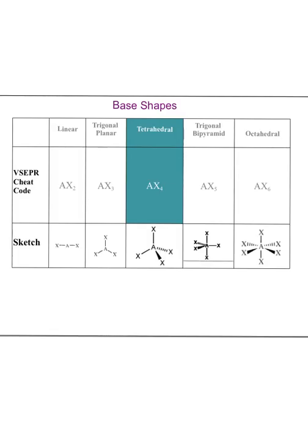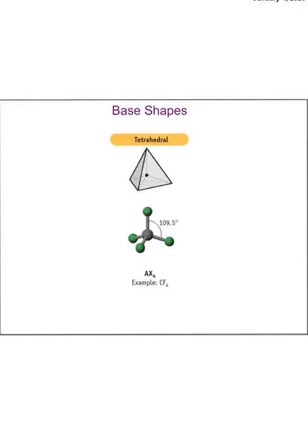Next we have tetrahedral, cheat code AX4 — one central atom and four bonded atoms. Tetrahedral gets us into 3D: picture one atom coming out toward you and one going back into the board. This gives a bond angle of 109.5 degrees. If it were flat and 2D, the angle would only be 90 degrees — by going 3D, the atoms are at a bigger angle and farther apart, which is what they want.